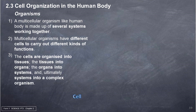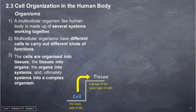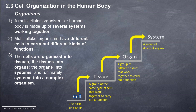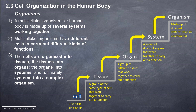Cell: the basic unit of life. Tissues: a group of the same type of cells that work together to carry out a function. Organ: a group of different tissues that work together to carry out a function. System: a group of different organs that work together to carry out a function. Organism: made up of different systems that are coordinated to carry out various functions.